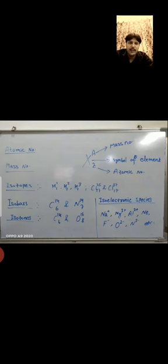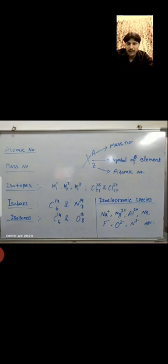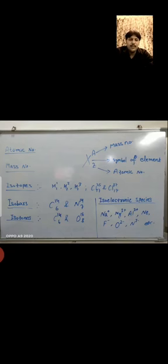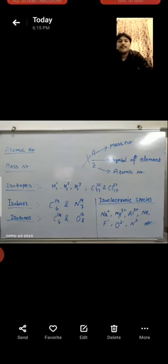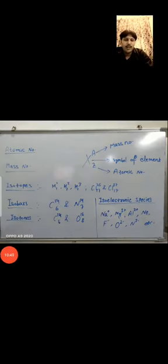When there is a positive charge, we subtract it from the atomic number; if there is a negative charge, we add to the atomic number. For sodium (atomic number 11): 11 − 1 = 10. For magnesium (atomic number 12): 12 − 2 = 10. For aluminium (atomic number 13): 13 − 3 = 10. Neon has atomic number 10 with no charge, so electrons = 10. For F⁻: 9 + 1 = 10. For O²⁻: 8 + 2 = 10. For N³⁻: 7 + 3 = 10.